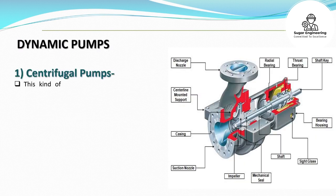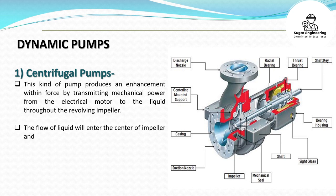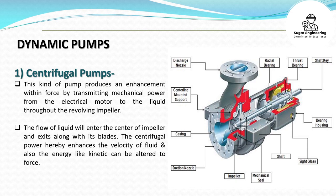Dynamic Pumps. 1. Centrifugal Pumps: This kind of pump produces an enhancement in force by transmitting mechanical power from the electrical motor to the liquid throughout the revolving impeller. The flow of liquid enters the center of the impeller and exits along its blades. The centrifugal force enhances the velocity of fluid, and kinetic energy can be converted to pressure.